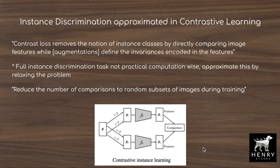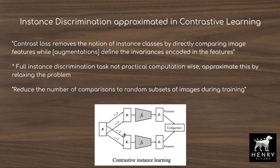The paper we're focusing on has a nice background and overview of previous state-of-the-art contrastive representation learning approaches. They describe how the contrastive loss removes the notion of instance classes by directly comparing image features in a Siamese architecture framework. Rather than stacking two images along the channel axis and passing through a classification network, you copy the network twice — or use a running average — and compare the feature vectors themselves.